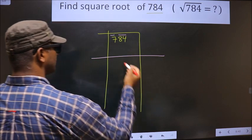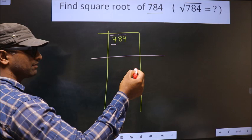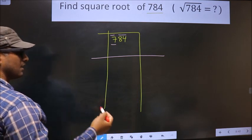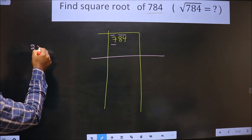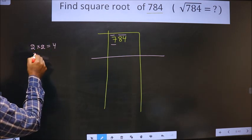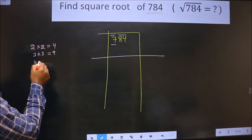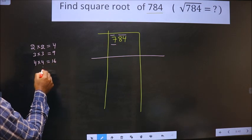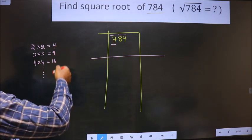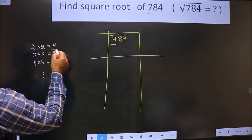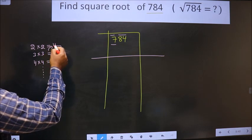So now here we have 7. Now we should check 7 lies between which two square numbers. The square numbers are these: 2 into 2 is 4, 3 into 3 is 9, 4 into 4 is 16, and it goes on. Here we have 7. 7 lies between these two numbers, so we take the smaller one, that is 4.